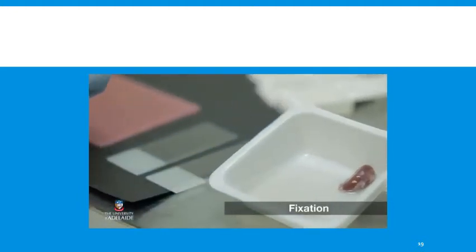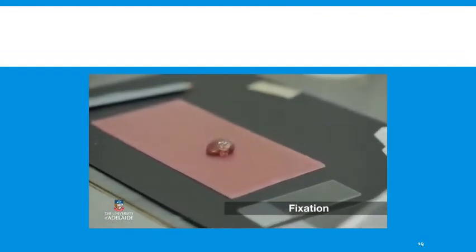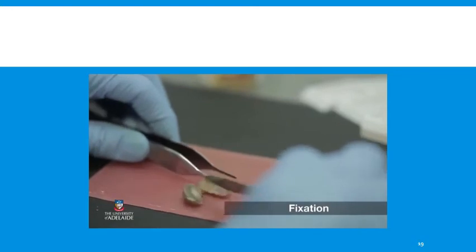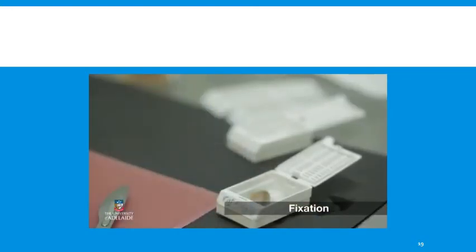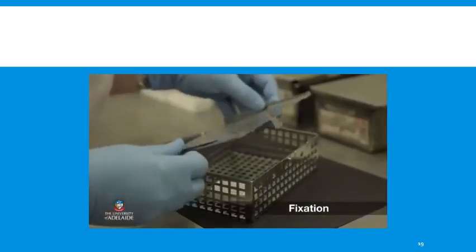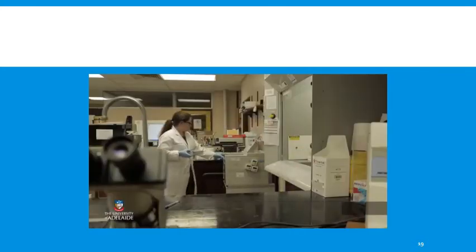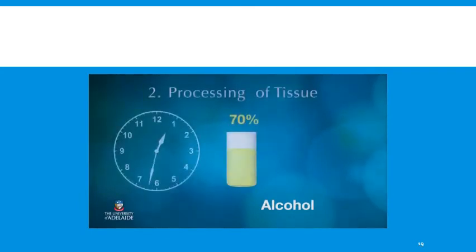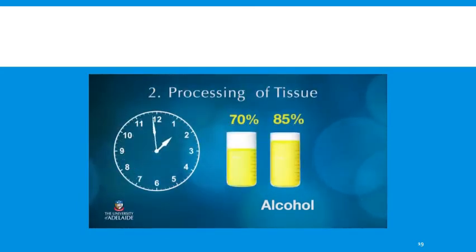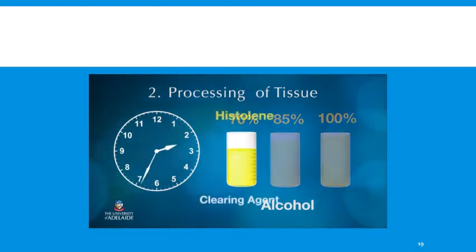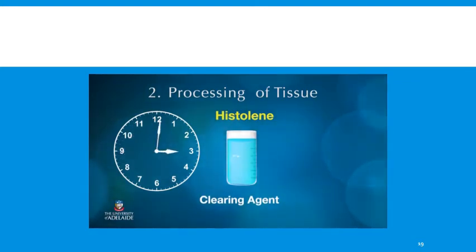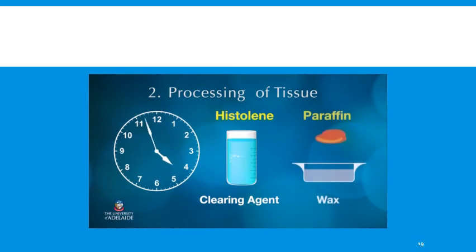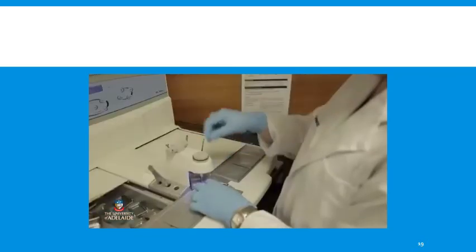For example, a specimen of this size would be fixed in formalin for approximately 24 hours and then stored in 70% alcohol. The original sample is trimmed, transferred into a labelled plastic cassette, and then into a stainless steel carrier with other labelled samples. The carrier is placed in the automatic tissue processor. In tissue processing, the water in the tissue is replaced with molten paraffin wax. To remove the water, tissue samples go through increasing strengths of alcohol solutions — the tissue is dehydrated gradually to avoid excessive shrinkage. Paraffin wax is not soluble in alcohol, so after dehydration, the tissue is exposed to a solvent miscible with both alcohol and paraffin wax. These solvents, for example xylol, are known as clearing agents because they also make the tissue translucent. This laboratory uses a non-toxic organic solvent, histaline. At the end of the cycle, the specimen is immersed for an hour or more in pots of molten paraffin wax.